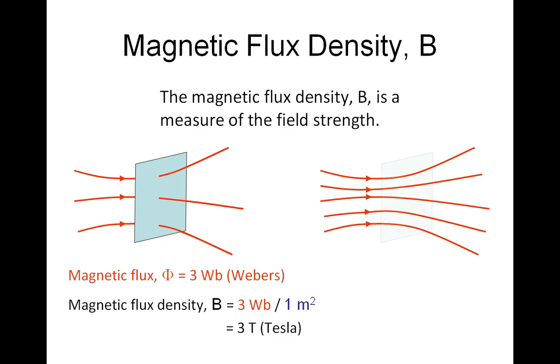Stronger field, closer packed field lines passing through the same one metre squared. This time we have a flux density of five Tesla.